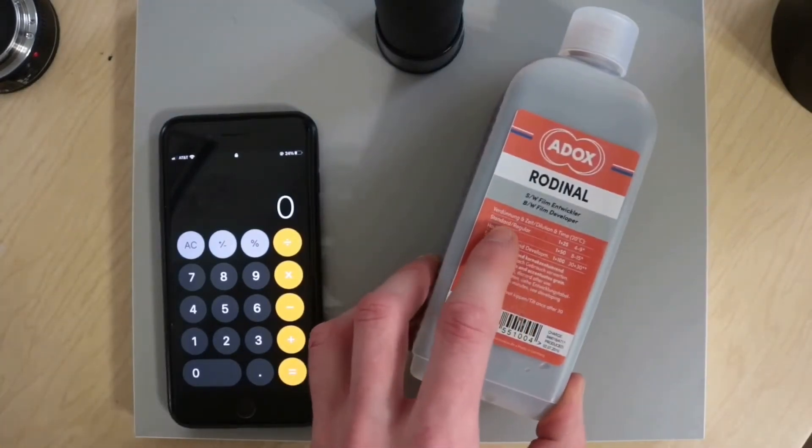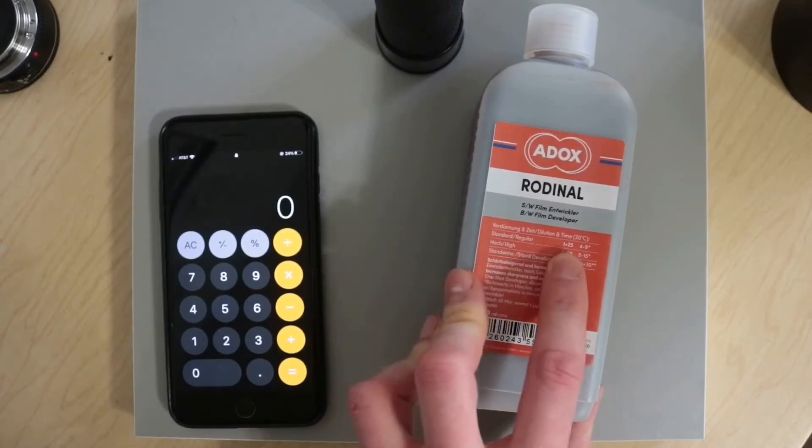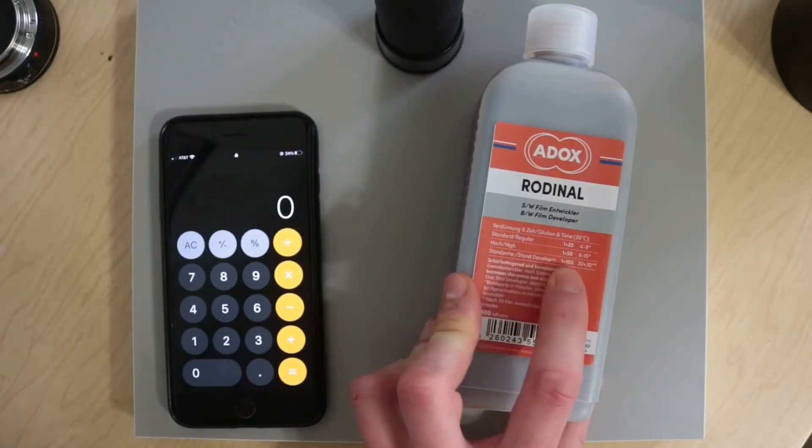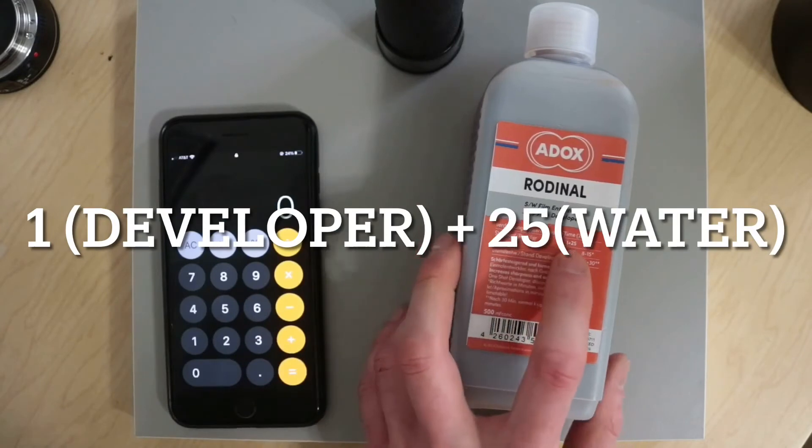If you look right here on the front of the developer bottle it shows all your dilutions. Your standard is just 1 plus 25, high contrast is 1 plus 50, and your stand development is 1 plus 100. So that's one part developer plus 25 parts water.